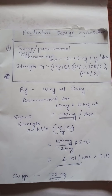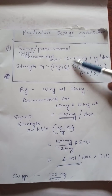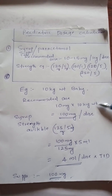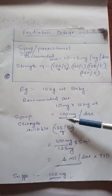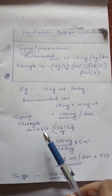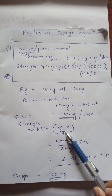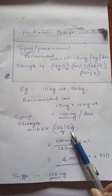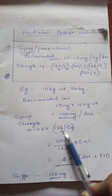For example, for a 10 kilogram weight baby, the recommended dose is 10 mg/kg × 10 kg, giving 100 milligram per dose. The available strength in your clinic may be 125 milligram per 5 ml, meaning if you give 5 ml the baby will get 125 milligram — but you need only 100 milligram.